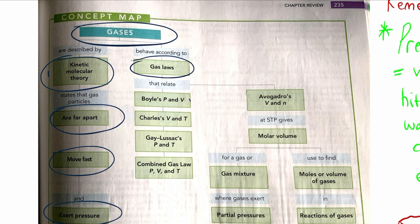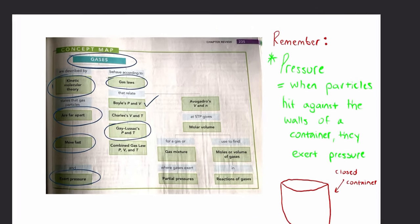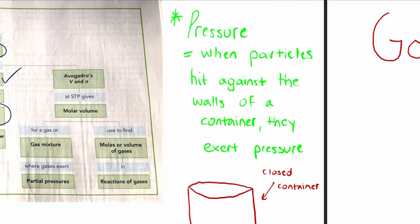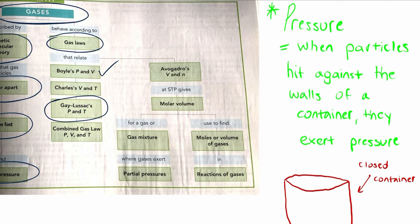They exert pressure and they behave according to these gas laws. One that we already talked about was Boyle's law, which is the relationship between pressure and volume while temperature is constant. Right now, we're talking about the Gay-Lussac, where pressure and temperature are in this relationship. Granted, volume is constant. If we look over to our side here, again, my favorite container.